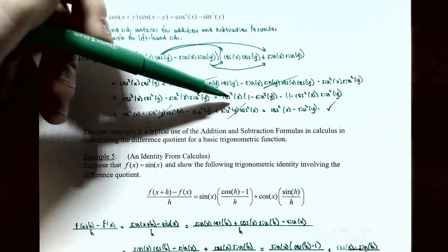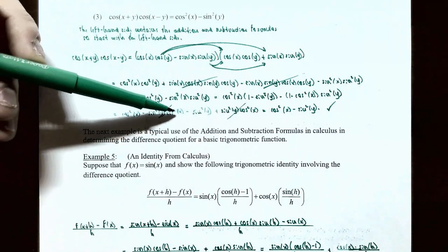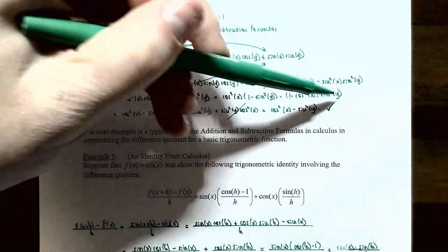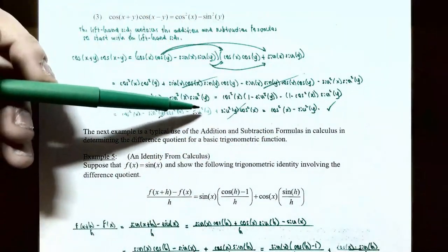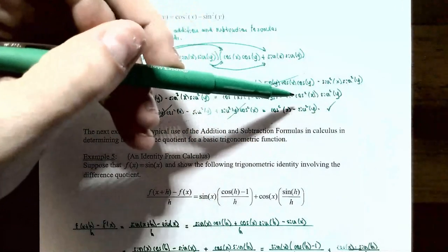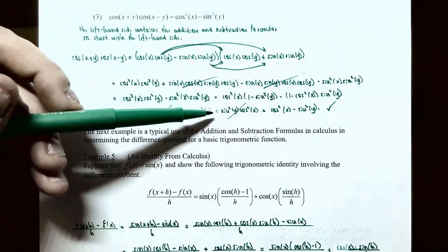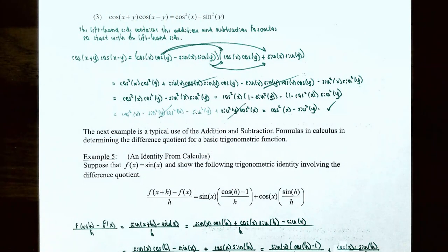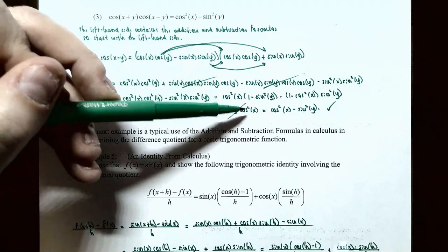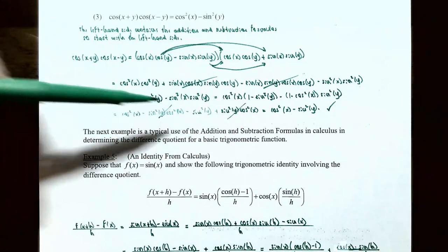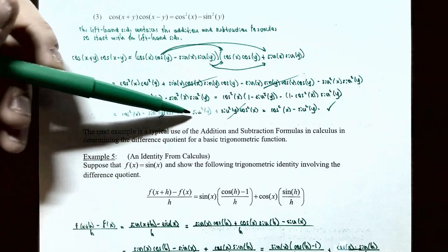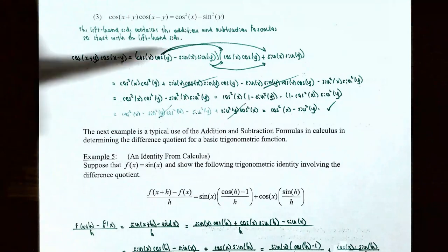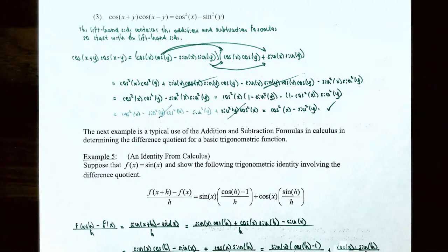After distributing, the first term gives cosine squared of x minus sine squared of y cosine squared of x. Distributing the second term with its negative sign gives minus sine squared of y plus sine squared of y cosine squared of x. The second and fourth terms — negative and positive sine squared of y cosine squared of x — are opposites and cancel. What remains is cosine squared of x minus sine squared of y, exactly the right-hand side. The identity is proved.